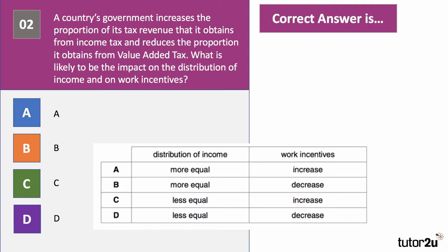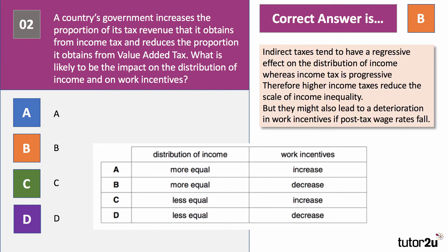Question number two: government shifting the burden of tax away from VAT towards progressive income tax. The right answer is B. Distribution of income should become more equal, and work incentives may worsen. Indirect taxes tend, on the whole, to have a regressive effect on income distribution, whereas income tax is progressive — the marginal rate of tax goes up with income. If income tax increases, the distribution of income will become more equal and the scale of income inequality will fall. However, higher income taxes could lead to a worsening in work incentives if the post-tax wage rate declines — the opportunity cost of leisure has come down.